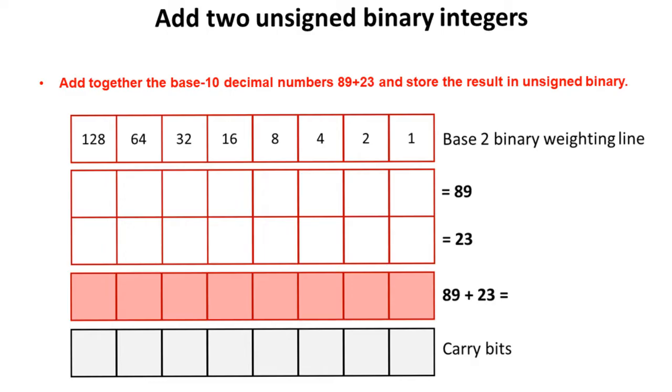There are several things to do on the screen here first, and this is a good idea to lay out your working like this in an exam. The first thing we've got is the base 2 binary weighting line which starts at 1, and every time we move to the left we multiply by 2, so we go 1, 2, 4, 8, all the way up to 128. Now the first thing we have to do is write out the numbers 89 and 23 in binary underneath the weighting line before we can add them together.